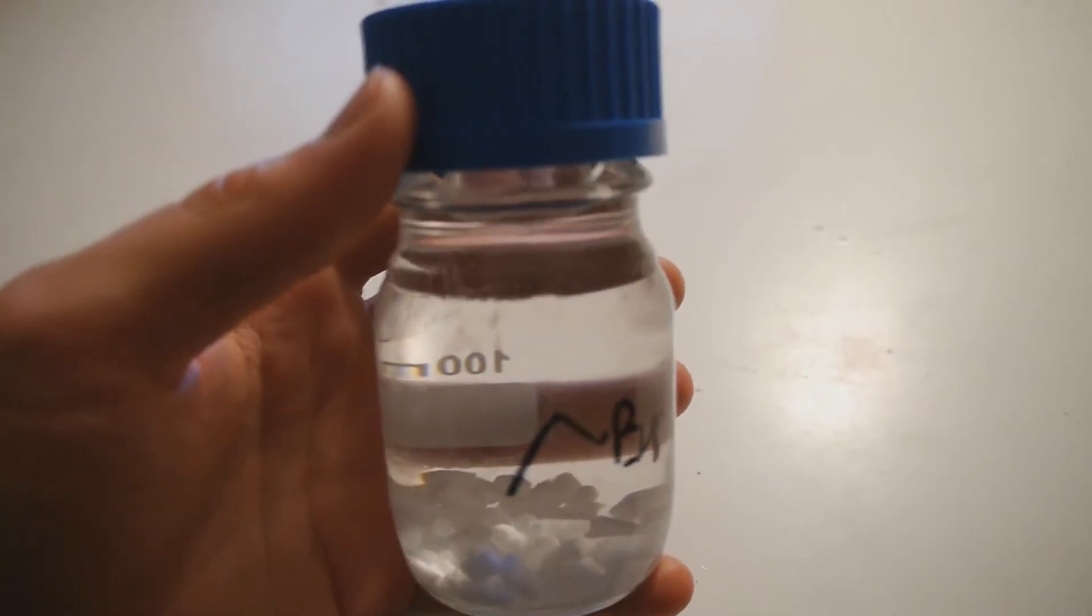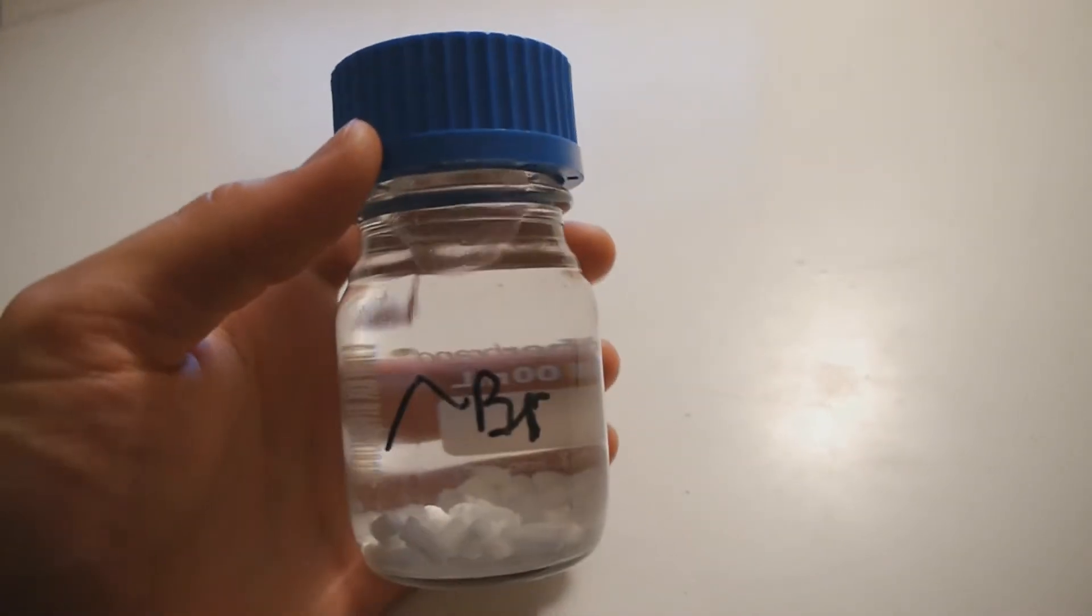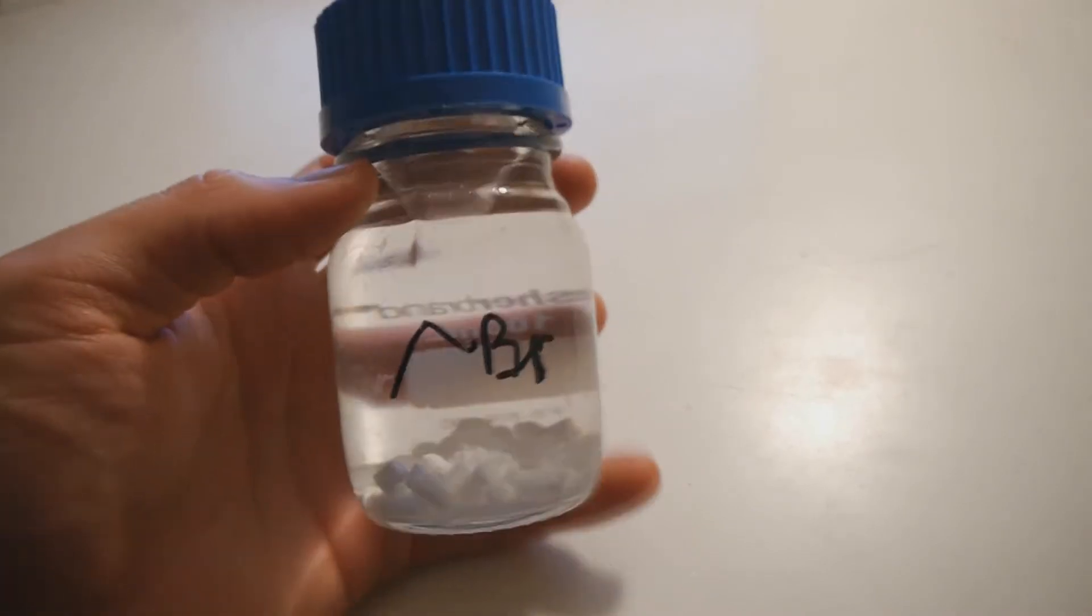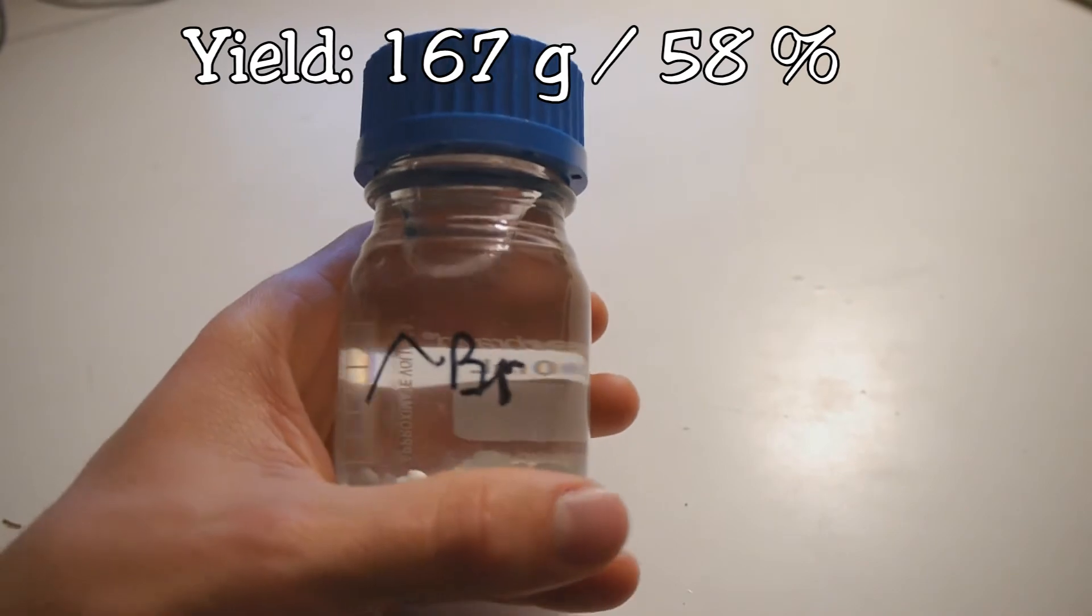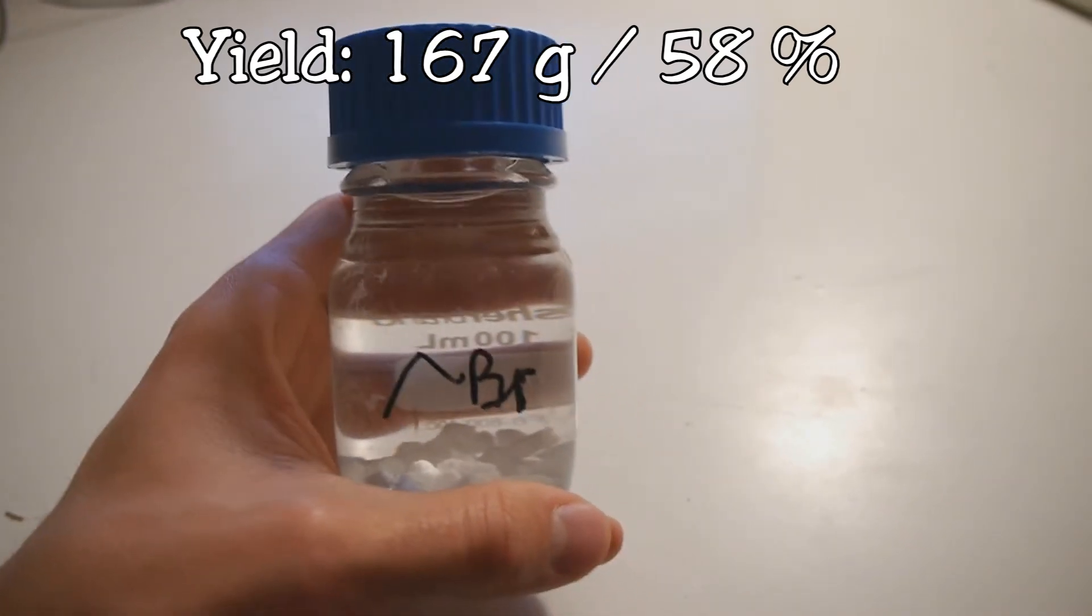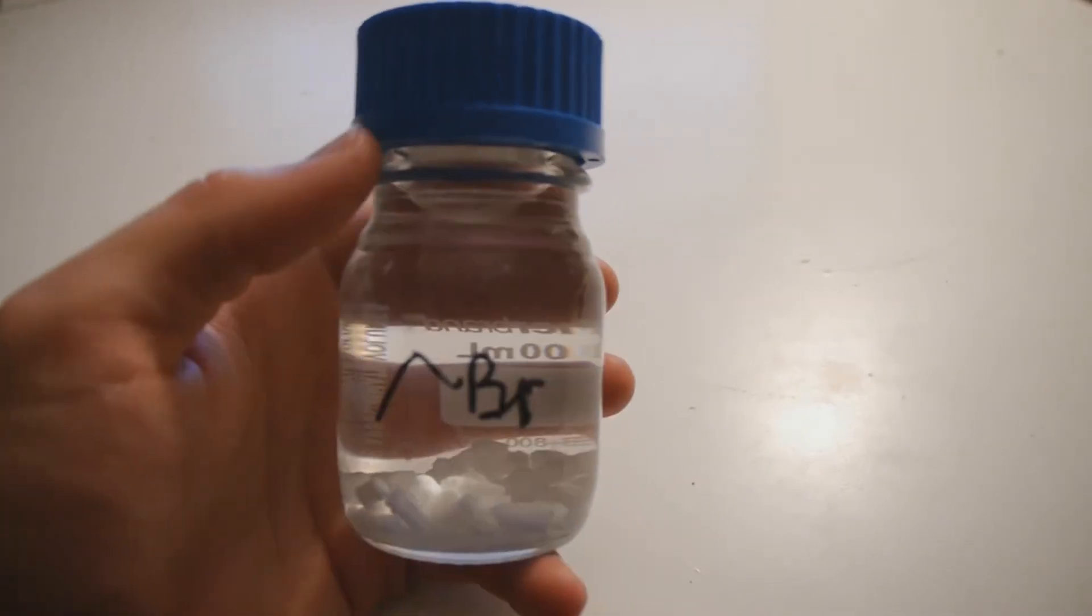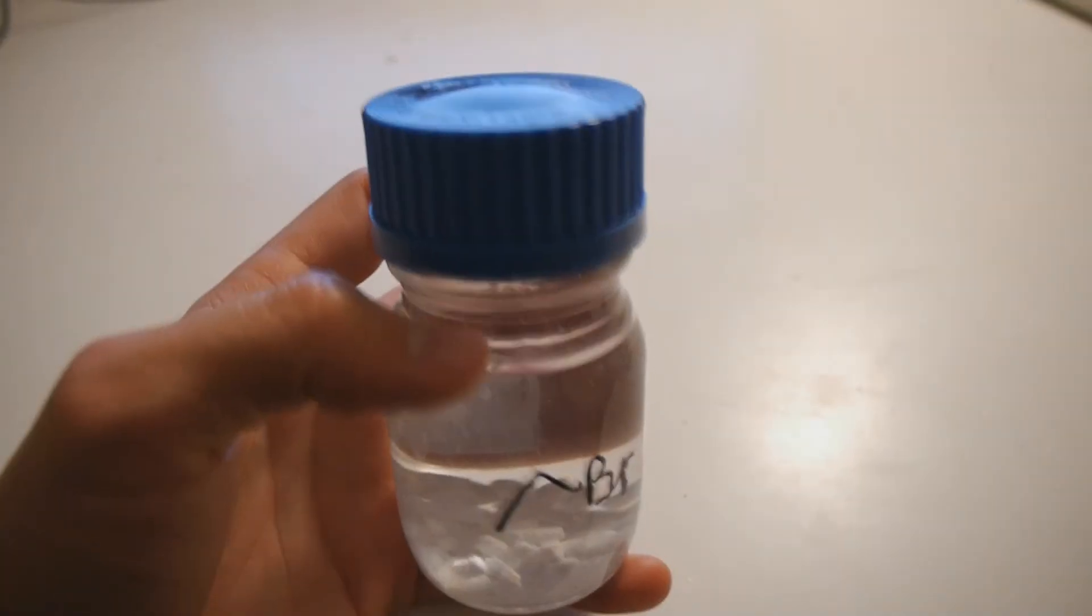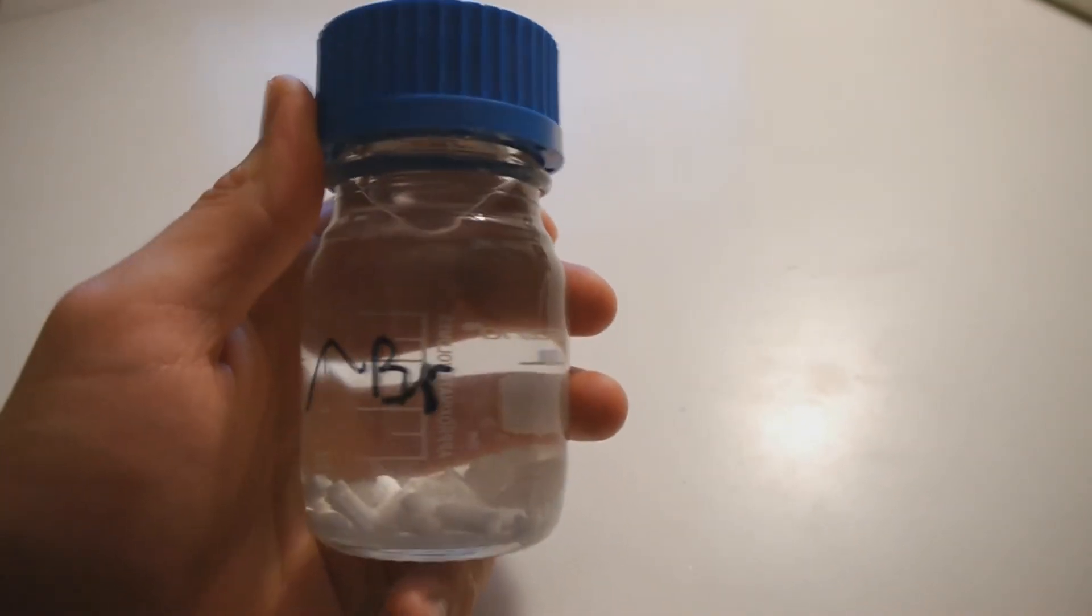So here's the final product of ethyl bromide. After having dried properly, the solution has now cleared up nicely. And this is about 167 grams, which corresponds to a yield of 58 percent, assuming my original assumption on the weight of sodium bromide is correct. But that could be totally off. You may have to take that yield with a grain of salt, the percent yield at least.